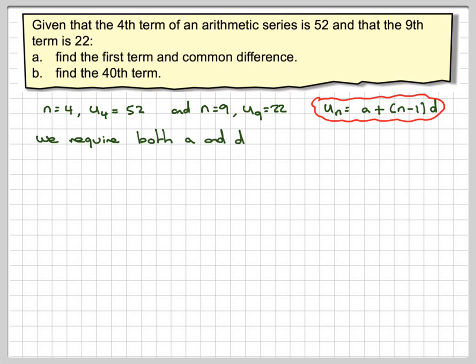So we require both a and d, therefore two unknowns. Therefore, we need to use simultaneous equations.